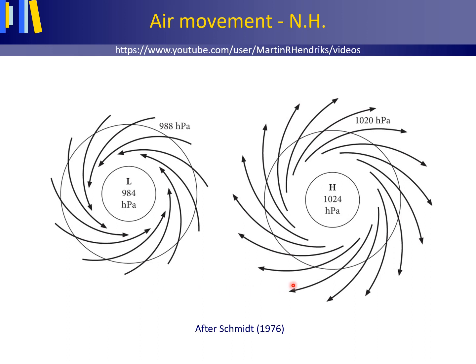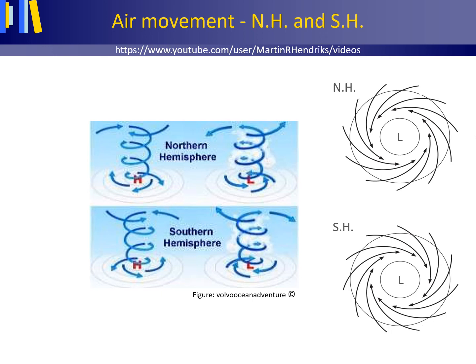The movement around and in high pressure areas is the opposite of what happens around low pressure areas. The air movement in the center of a high pressure area is downward, and then the air spirals out of the high pressure area. So, on the northern hemisphere, we have an anti-clockwise movement around low pressure areas and a clockwise movement around high pressure areas. In the southern hemisphere, this is reversed: clockwise around low pressure areas and anti-clockwise around high pressure areas.